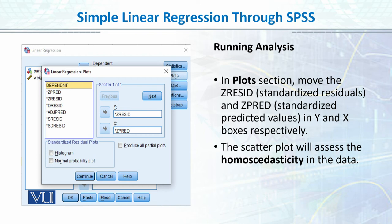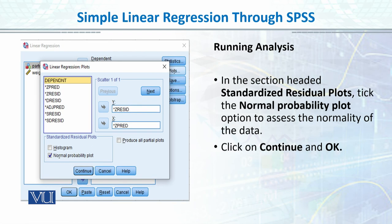Then we went through plots, where we used Z predicted and Z residual — Z predicted and Z residual — in order to check the normality.